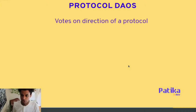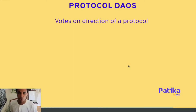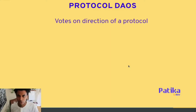Let's look at protocol DAOs first. The DAO in a protocol DAO votes on the direction of a protocol. Each protocol has different assigned rules and policies, and the DAO of a protocol would be a group of people voting on ways the protocol can improve or change — either technically, functionally, or operationally. They do this through governance tokens, which directly tie to the type and influence that an individual has in the voting.